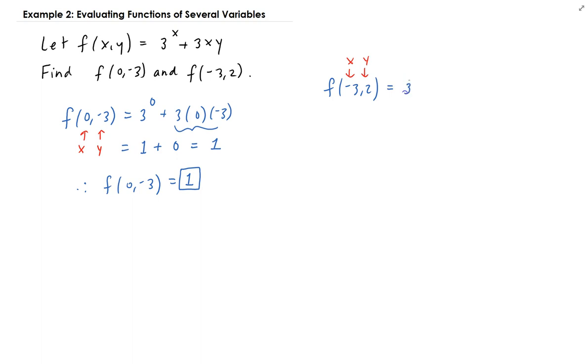So you're going to have 3 to the power minus 3, plus 3 times minus 3, times 2. So 3 to the power minus 3, that's the same as 1 over 3 cubed. I just bring this to the denominator, change the sign on the exponent. And then you're going to get 3 times minus 3 is negative 9, times 2 will be minus 18. So this is 3 to the power 3 is 27 minus 18.